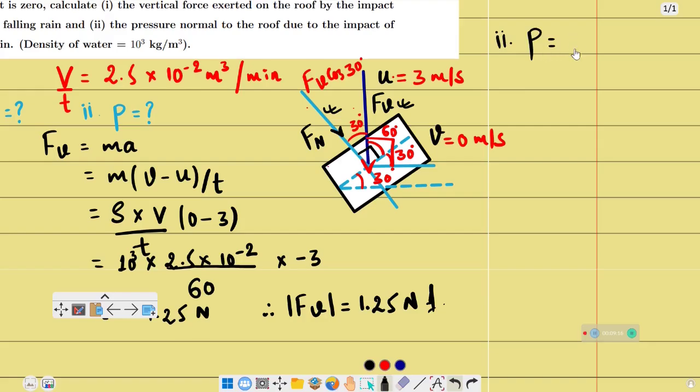We need pressure normal to the roof. Pressure is force per unit area. So normal force per unit area.